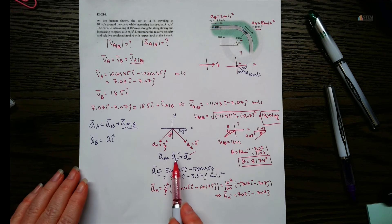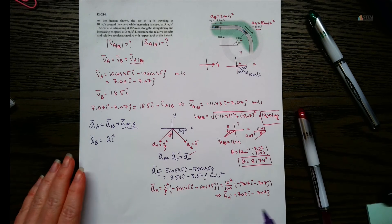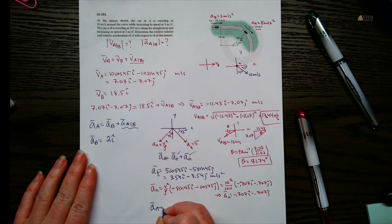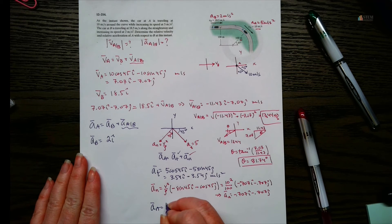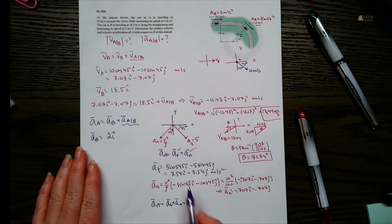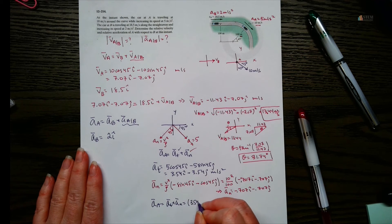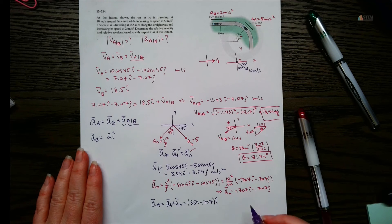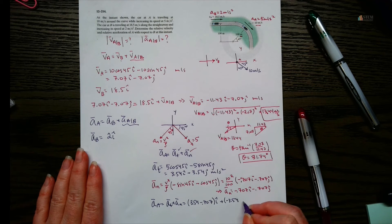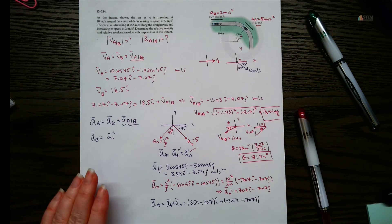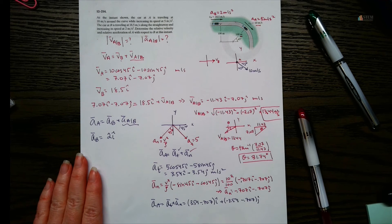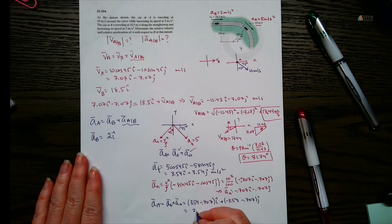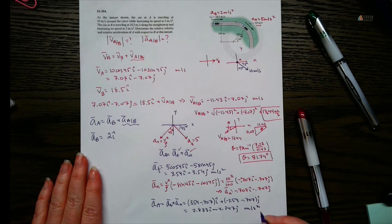Now we combine the tangential and normal components for acceleration of A. Grouping like terms: I component is 3.54 minus 0.707, and J component is negative 3.54 minus 0.707. That gives acceleration of A equals 2.833 I minus 4.247 J meters per second squared.